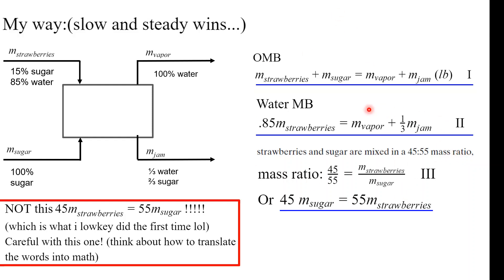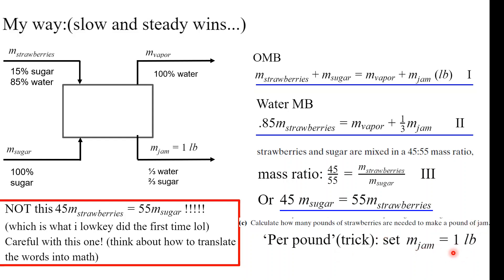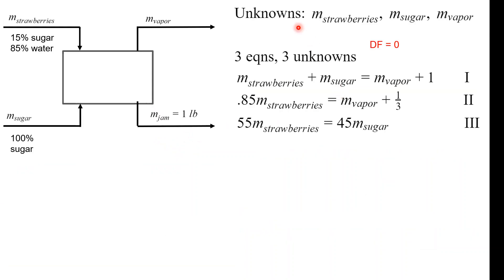We need to calculate how many pounds of strawberries are needed to make one pound of jam. A trick is to set one pound of jam as our given — this is our basis. For degrees of freedom: we have three unknowns — strawberries, sugar, and vapor — and three equations: the overall mass balance, the water mass balance, and the ratio equation. Degrees of freedom equals zero, which means we can solve it. You want it to be zero; if it's non-zero, you can't solve it.